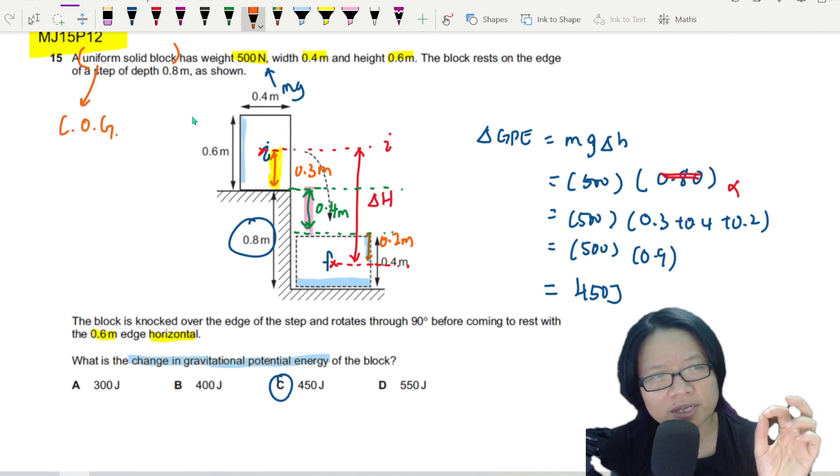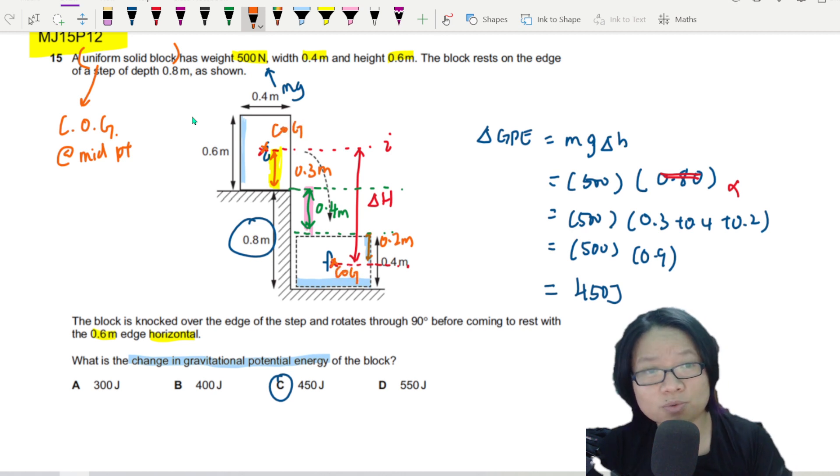Because this is uniform solid block, the center of mass or the center of gravity is at the midpoint. So here is a COG and here is a COG. We have to take from center of gravity to the next center of gravity - here to here. It's not 0.8, it's actually 0.9.